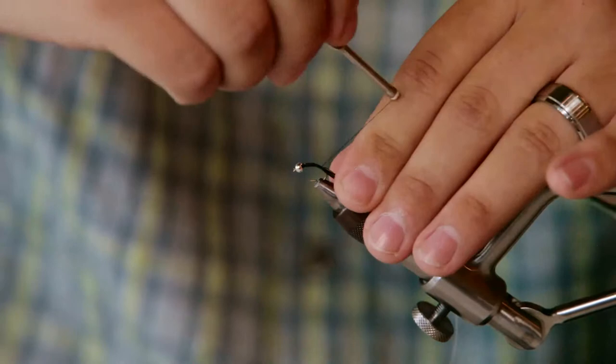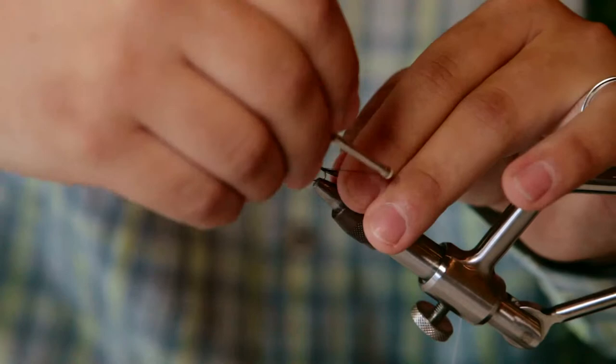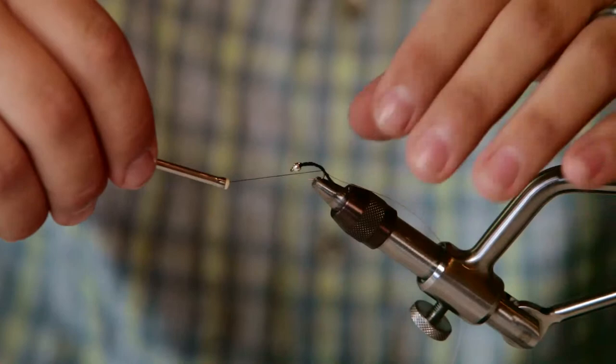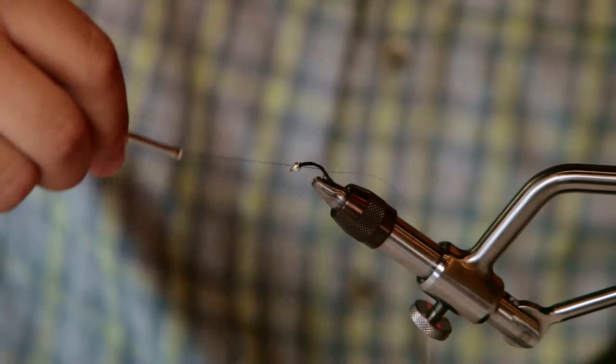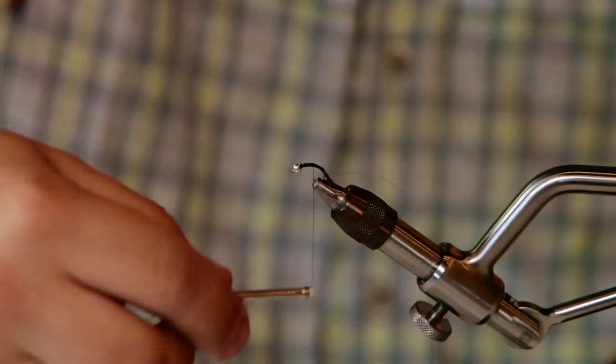Now because the body of this fly is thread wraps, it's not the pheasant tail, the pheasant tail is just the tail fibers for the fly. Once I get secured down to the bend of the hook, I'm going to actually come back and make sure that I have a nice smooth body from tail to the head.